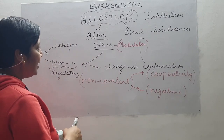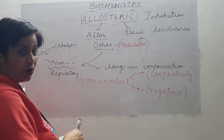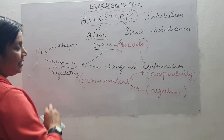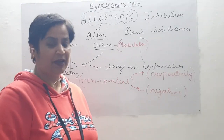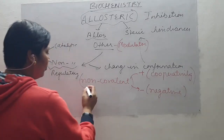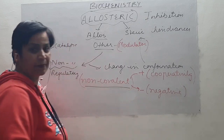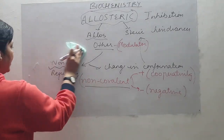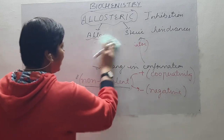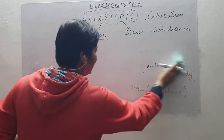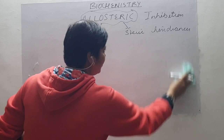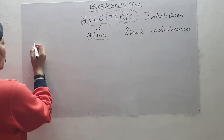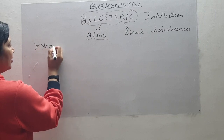In allosteric inhibition, there is binding of a modulator to a site different from the catalytic site. Always remember it is non-covalent. So we can conclude that allosteric inhibition is simply a non-covalent interaction.